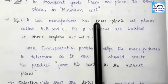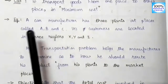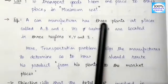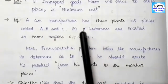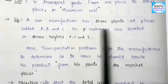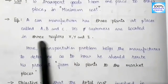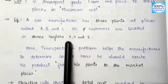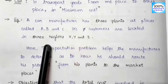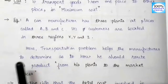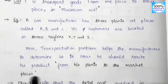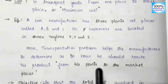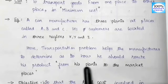For example, a car manufacturer has three plants at places called A, B, C. His customers are located in three regions: X, Y, and Z. In this case, the transportation problem will help you transport goods from his plant to the marketplace. The manufacturing area is the source, and the marketplace will be the customers.